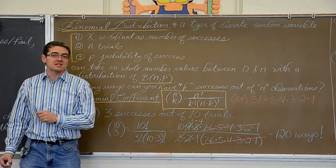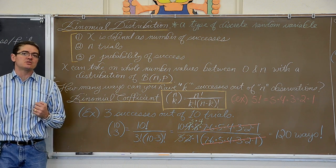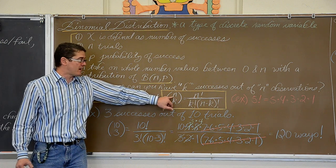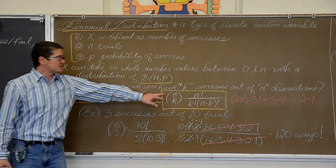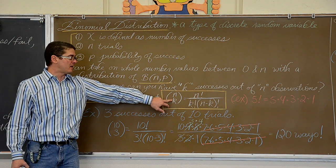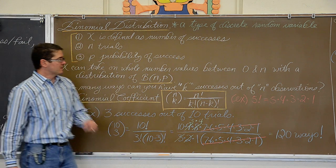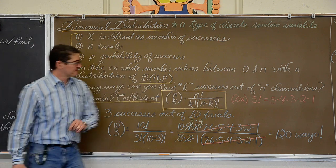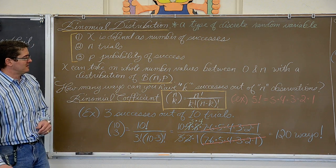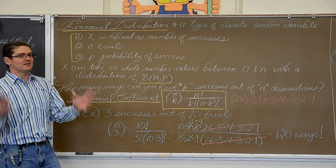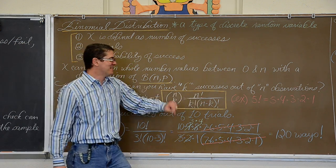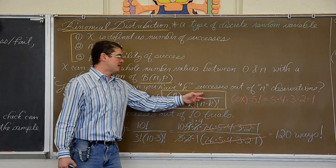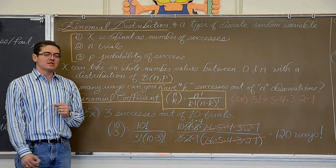How many ways can you have k successes in n observations? There is the binomial coefficient, written as (n over k) — that is not a fraction, just parentheses with two stacked numbers. The top number is the number of trials and the bottom is the number of successes you are concerned with. The formula is n! divided by (k! times (n−k)!). If you don't know what the exclamation mark means: 5 factorial is 5 × 4 × 3 × 2 × 1. Factorial notation is repeated multiplication counting down by 1 until you reach 1.